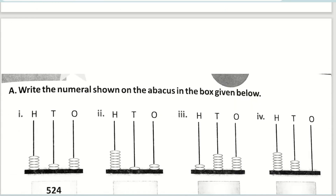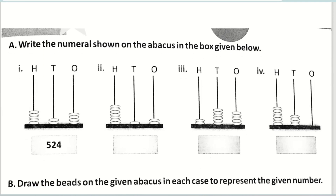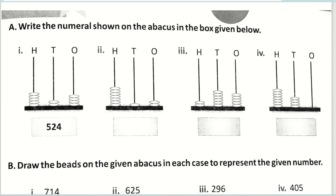The next one is: write the numerals shown on the abacus in the box given below. The first one is already done for you; we'll go for the next one. How many hundreds are there? One, two, three, four, five, six, seven — seven hundreds. How many tens? One ten. And how many ones? Two ones. So the answer is seven hundred twelve.